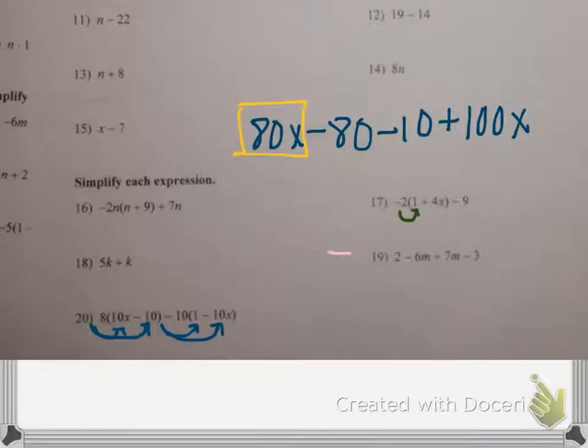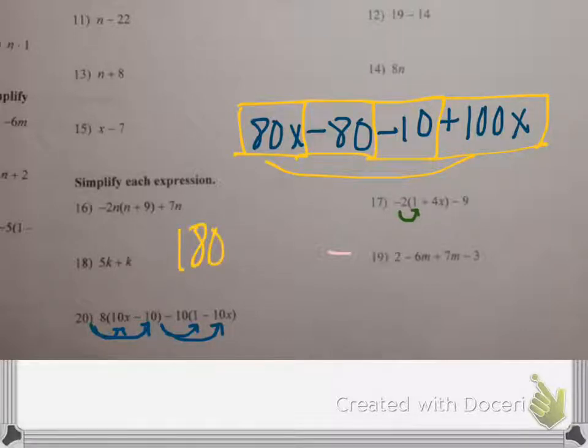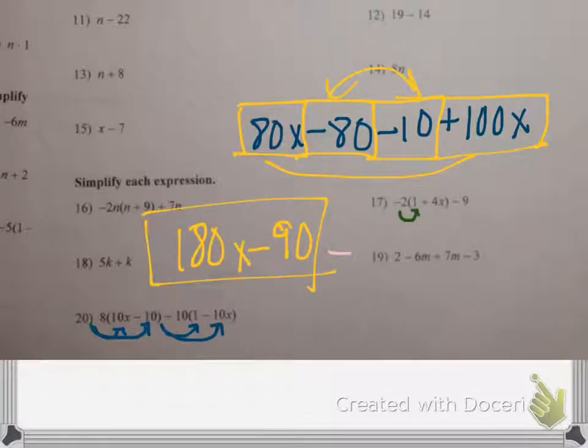We have four terms. These two can go together, and they're both positive, so that's 180x. These two can go together, and they're both negative, so that's 90, negative 90. And that is the final answer.